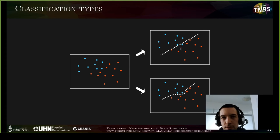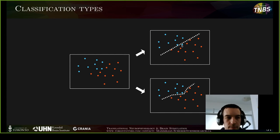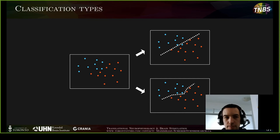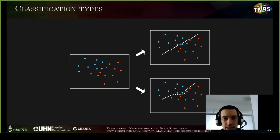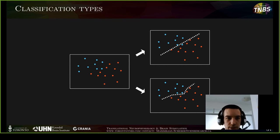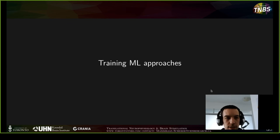Non-linear approaches usually need way more data to train a more complicated model. You also ideally need to know what kind of non-linear shape your data has — and if you already have that information, you could have linearized your data and gone with the faster linear approach. So non-linear approaches require more information about the data and more data to train the algorithm.